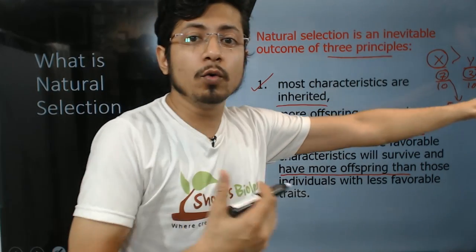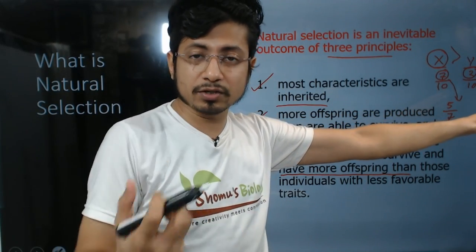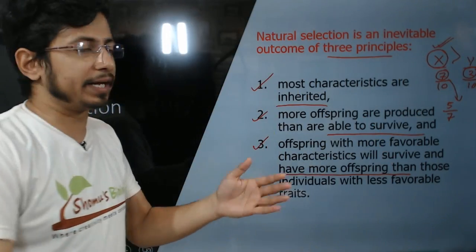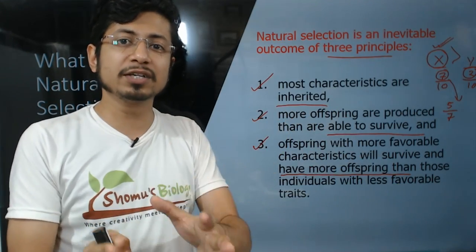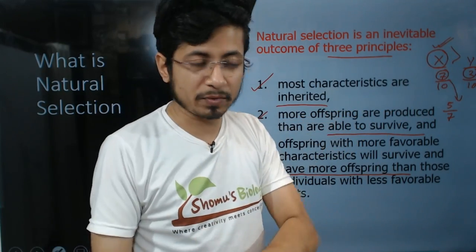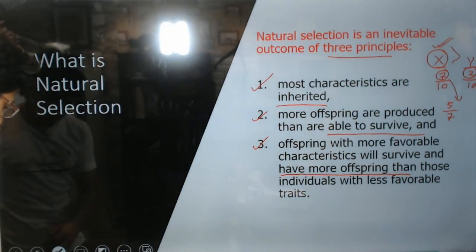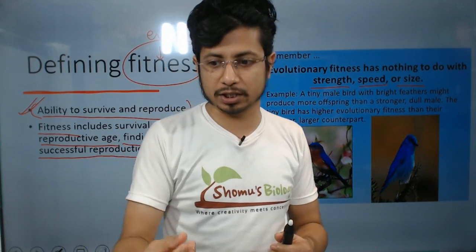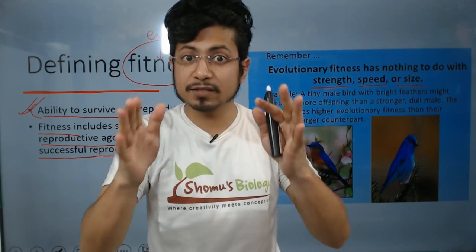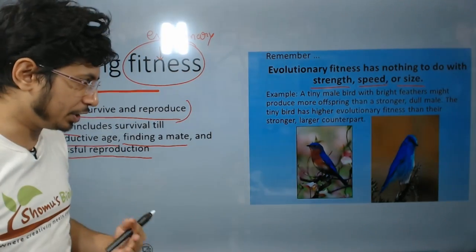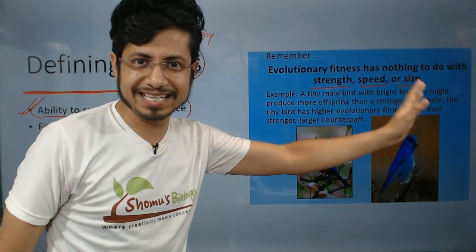Between X and Y, who will get extra advantage during natural selection — who will be selected by nature? X will be more selected by nature over Y. That is natural selection in simple terms: nature's selection. Nature selects the best fit organism to the environment — not the strongest, not the smartest, but the most fit to that environment and those environmental conditions.